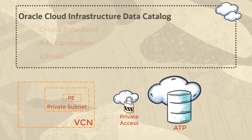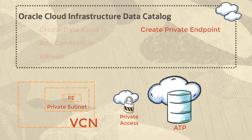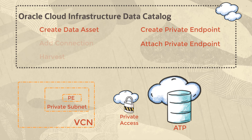To be able to harvest such a data source which can only be accessed privately, you must first create a private endpoint in data catalog by providing the VCN and subnet for the data source. After creating the private endpoint, you attach it to the data catalog. Next, while registering the data source as a data asset, specify that you want to use the private endpoint that is attached to the data catalog.